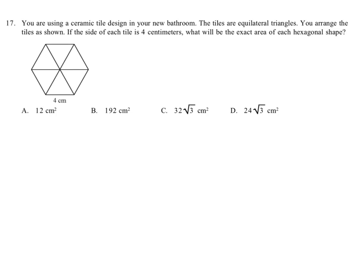Okay, you're using a ceramic tile design in your new bathroom and the tiles that you're using are equilateral triangles. You can see six tiles here in the illustration. You arrange the tiles as shown. If the side of each tile is four centimeters, what will be the exact area of each hexagonal shape?